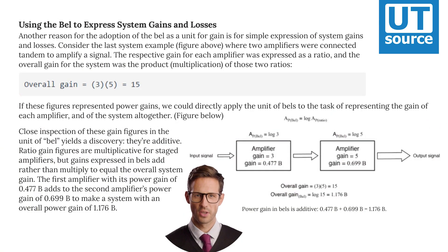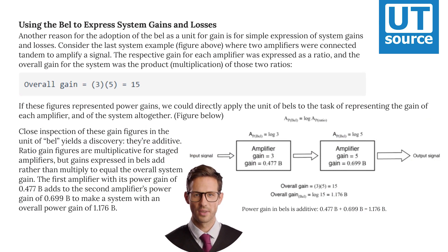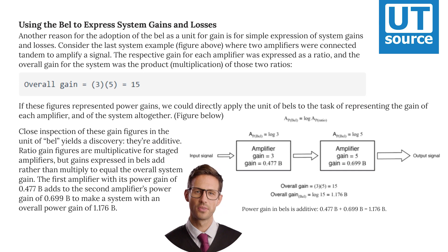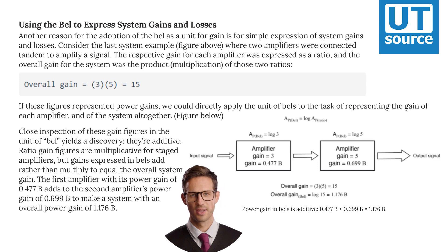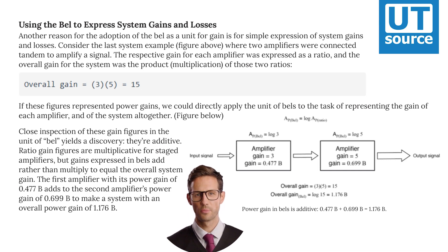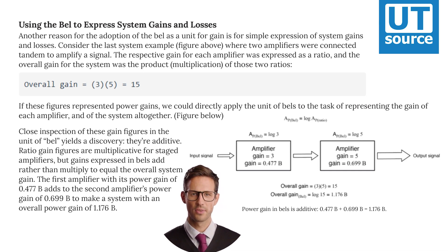Another reason for the adoption of the bell as a unit for gain is for simple expression of system gains and losses. Consider the last system example where two amplifiers were connected in tandem to amplify a signal. The respective gain for each amplifier was expressed as a ratio, and the overall gain for the system was the product of those two ratios. If these figures represented power gains, we could directly apply the unit of bells to the task of representing the gain of each amplifier and of the system altogether.